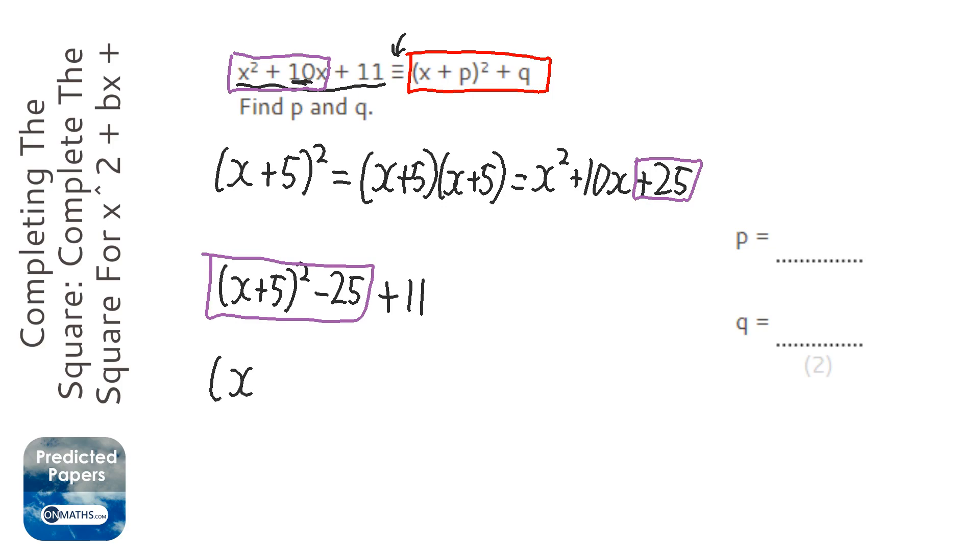Then, we're just going to put it together, and we're going to put the minus 25 and the plus 11 together, so it makes minus 14. So, our p-value is the thing inside the bracket, x plus 5, and our q-value is the bit outside the bracket, so that's minus 14.